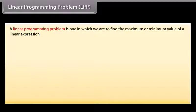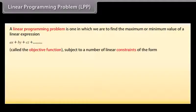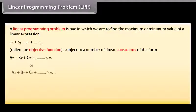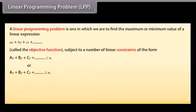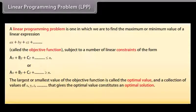Linear programming problem, LPP: A linear programming problem is one in which we are to find the maximum or minimum value of a linear expression AX plus BY plus CZ plus and so on, called the objective function, subject to a number of linear constraints of the form AX plus BY plus CZ plus and so on less than or equal to N, or greater than or equal to N. The largest or smallest value of the objective function is called the optimal value, and a collection of values of X, Y, Z and so on that gives the optimal value constitutes an optimal solution.